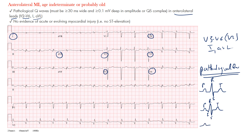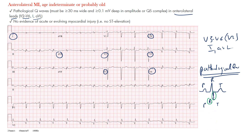A more complex QRS might include a Q wave, R wave, and R prime wave — a second R wave — and an S wave, followed by the T wave. The main ones we want to focus on when looking for prior infarct are Q waves: the first negative deflections that precede the R wave. Do not confuse them with S waves, which are negative deflections that come after the R wave.